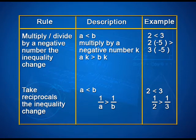The fourth rule states that taking reciprocals on both sides of the inequality again reverses the inequality. So if a is less than b, then 1 by a is greater than 1 by b. For example, if 2 is less than 3, then 1 by 2 is greater than 1 by 3. The same rules apply for the greater than inequality and also for greater than or equal to or less than or equal to inequalities.